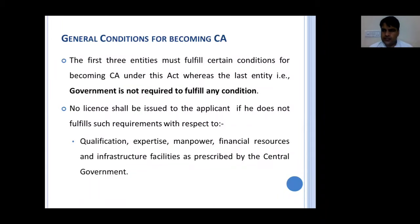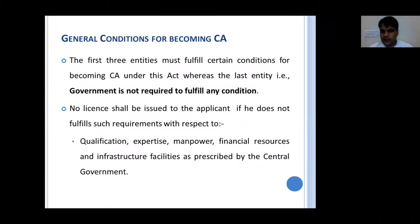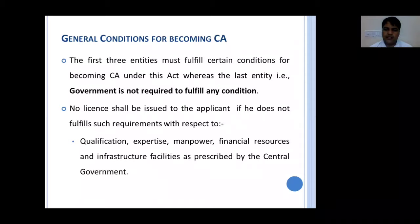Other entities like companies, partnership firms, or individuals need to fulfill conditions. It says that no license will be issued to an applicant if they do not fulfill requirements with respect to qualification, expertise, manpower, financial resources, and infrastructure facilities as decided by the central government. Only then can a person apply for a certifying authority license.